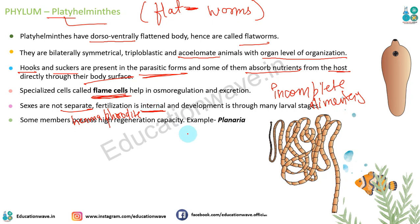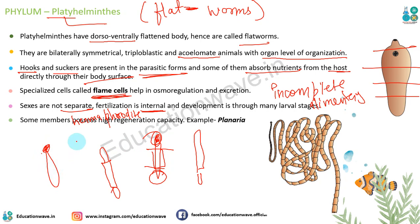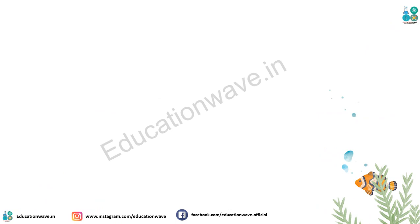Some members jaise Planaria mein high regeneration capacity hoti hai. Agar aap Planaria ko kahin se bhi cut karo toh woh poori body regenerate kar leta hai. Agar teeno pieces karo - upar se, beech se, neeche se - har piece apni poori body bana leta hai. Yeh high regeneration capacity Platyhelminthes mein ek unique feature hai aur asexual reproduction ka bhi hissa hai.